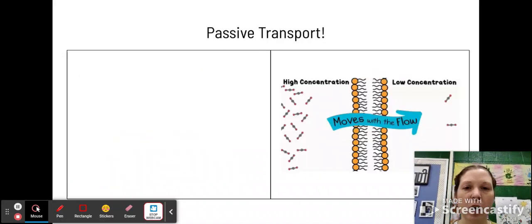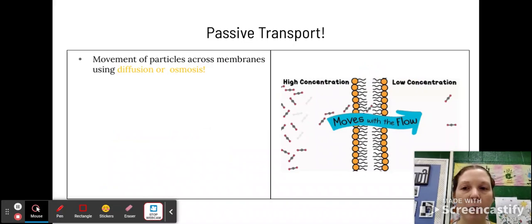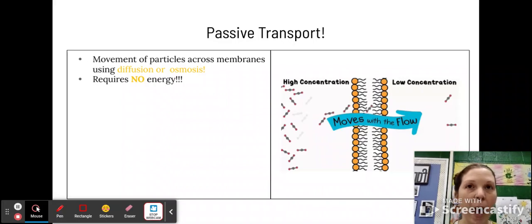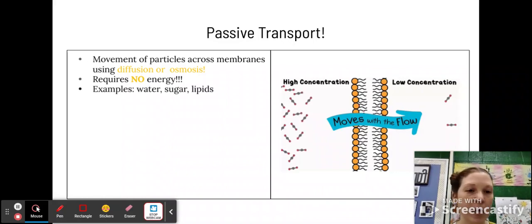So first, let's talk about passive transport. The movement of particles across a membrane using diffusion or osmosis, moving from one side to the other. And there's a specific reason why this is passive, and that's because it requires no energy for this to happen. It will happen spontaneously on its own. And some examples that we see that use passive transport are water, sugars, and lipids.